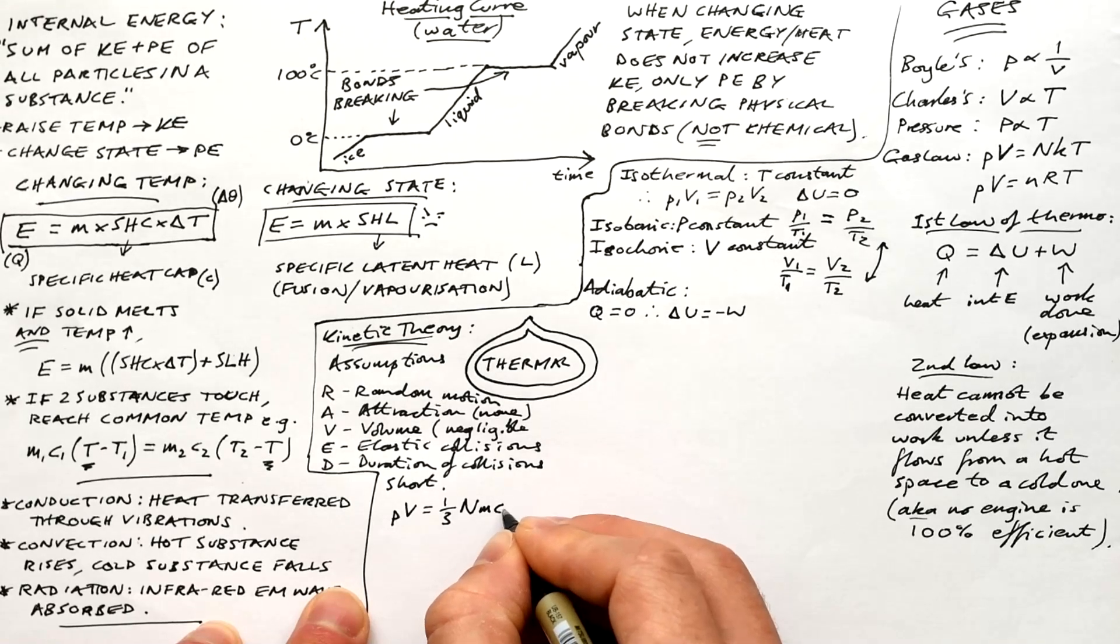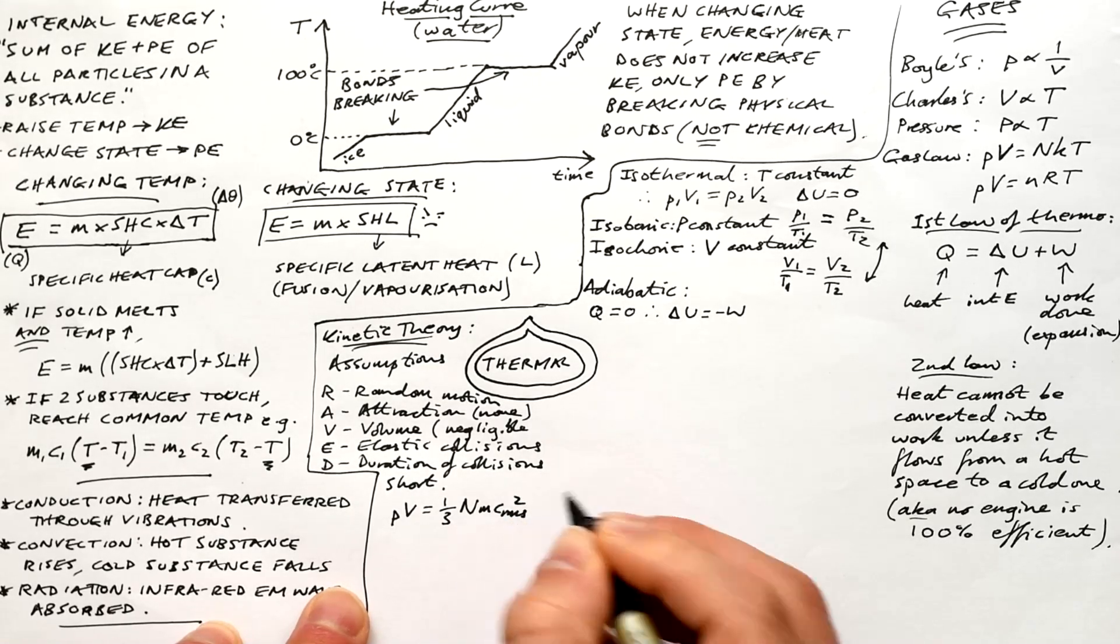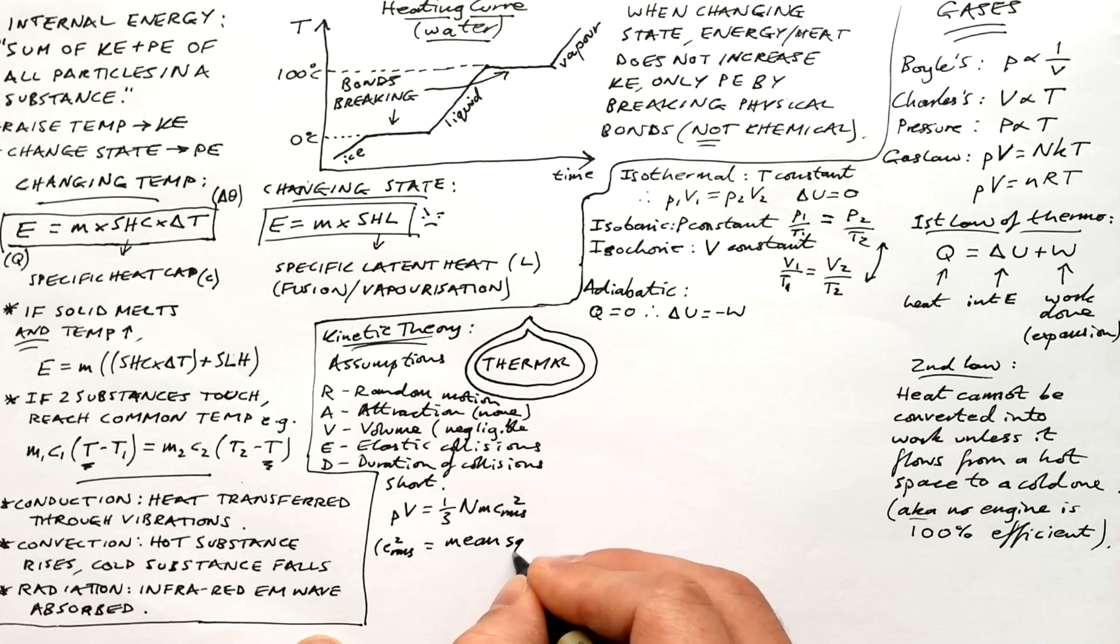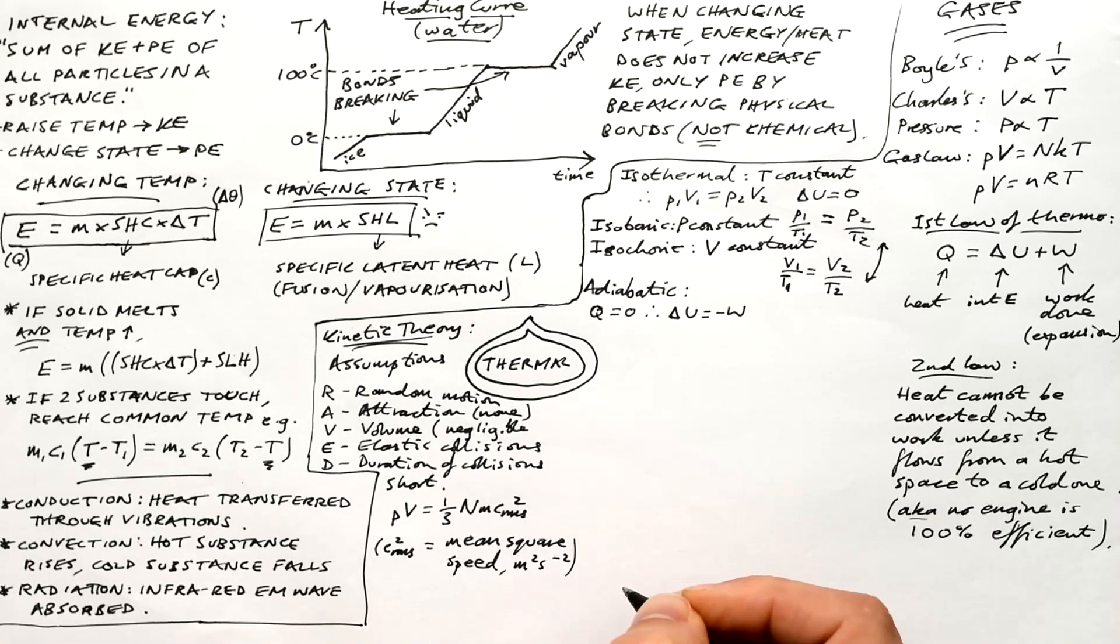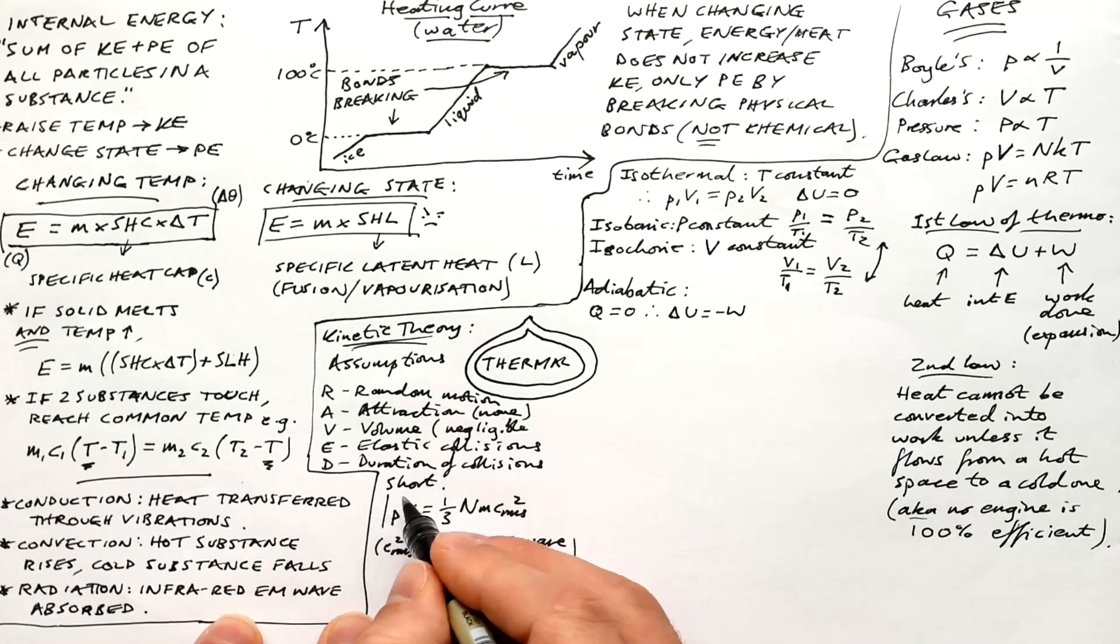Here's the final equation. PV equals third NMC RMS squared. CRMS being root mean square speed. So CRMS squared is also called mean square speed. Be careful that you don't get those two confused. If you want to see how to derive PV equals third NMC squared, then have a look at my kinetic theory video.